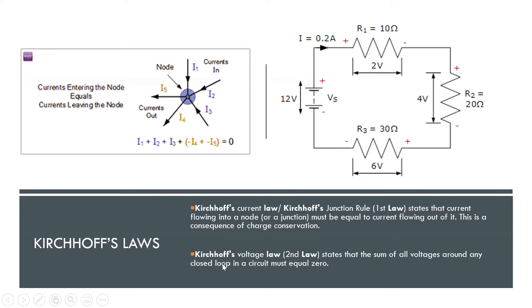Now let us go to the second law, which is Kirchhoff's voltage law. Kirchhoff's voltage law states that the sum of all voltages around any closed loop in a circuit must equal zero. Here you can see a closed loop with one voltage source providing 12 volts, and a current of 0.2 ampere flowing throughout the loop through resistances R1, R2, and R3.